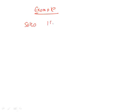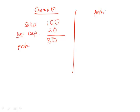Example 1: Sales are 100, and the only expense is depreciation of 20, so profit is 80. If we want to derive cash flow from this profit, cash flow should be 100 because depreciation was never paid in cash. So from 80, we add back the non-cash charge — depreciation of 20 — to arrive at cash flow from operations of 100. This explains why we add non-cash charges.